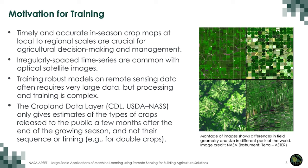Irregularly spaced time series are common with optical satellite images. Training robust models on remote sensing data often requires very large data, but processing and training is complex. The cropland data layer provided by the USDA's National Agricultural Statistics Service only gives estimates of the types of crops released to the public a few months after the end of the growing season, and not their sequence or timing — for example, double cropping.